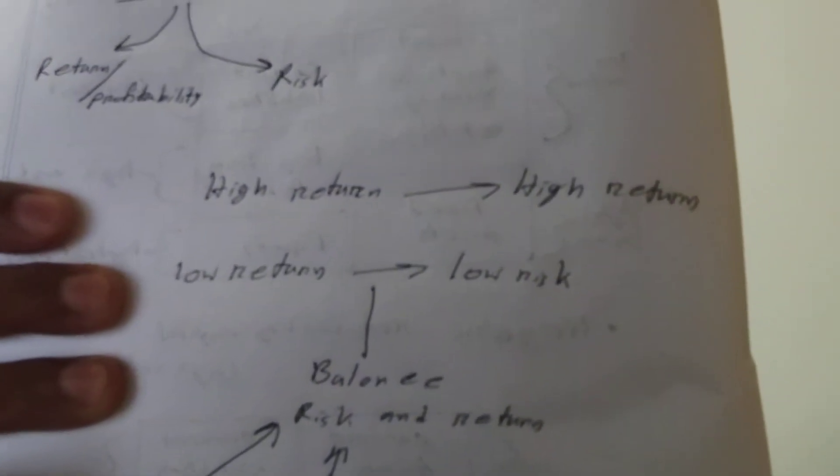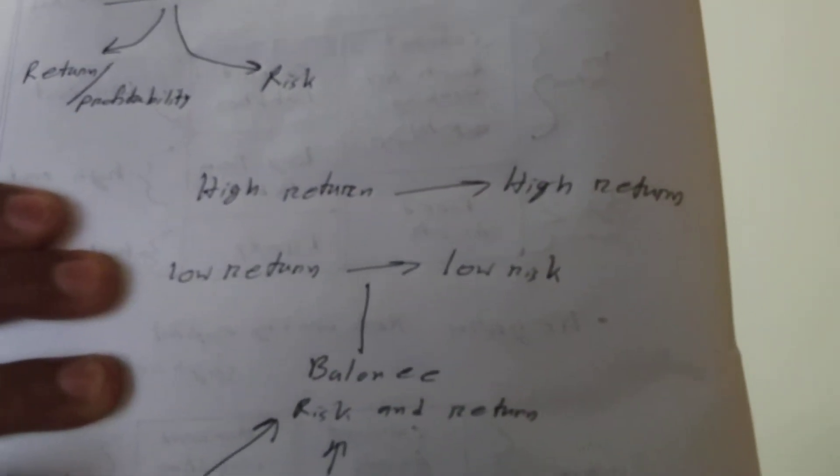If the risk is low, the return will also be low. Just like this: high risk equals high return, and low risk equals low return. Now, each and every firm has to decide to make a balance between this risk and return.